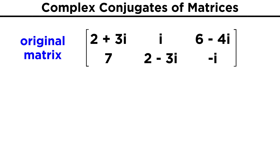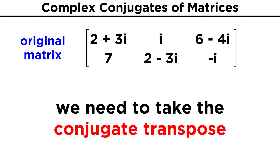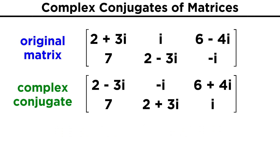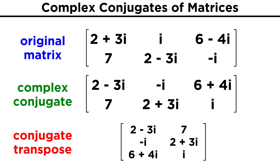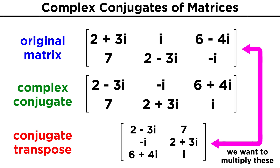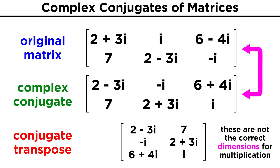However, when it comes to matrices, there is another operation that is much more important than taking the conjugate, and this is taking the conjugate transpose. Finding this is not too difficult — you simply take the conjugate, as we just did, and then take the transpose of the matrix, which involves making the columns into rows and the rows into columns. The reason we want to do this is so that we can multiply the matrix and the conjugate transpose. Simply taking the conjugate will not give us matrices we can multiply if they are not square.